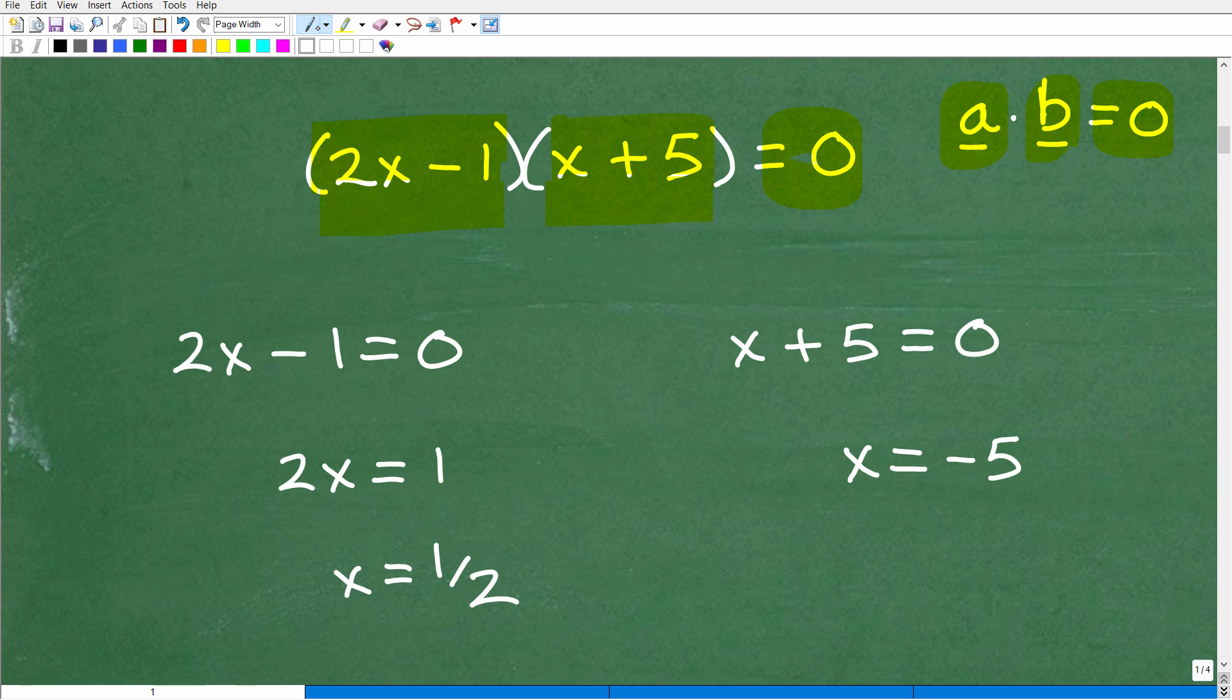So one or both of these numbers must be zero. And this is something called the zero product property, okay? Very important and absolute great way to solve equations in algebra. If you can write the factors on one side of the equation and have that equal to zero, you can use the zero product property. And the way that works is that you can set each factor equal to zero.